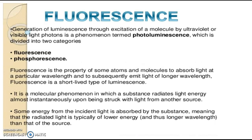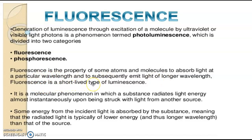First, we will start with fluorescence. Generation of luminescence through excitation of a molecule by ultraviolet or visible light photons is a phenomenon termed as photoluminescence, which is divided into two categories: fluorescence and phosphorescence. Fluorescence is the property of some atoms and molecules to absorb light at a particular wavelength and to subsequently emit light of longer wavelength. Fluorescence is a short-lived type of luminescence.